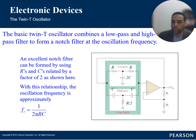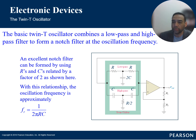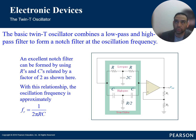The feedback network consists of two T-shaped filter networks. Each T network comprises two resistors and two capacitors arranged in a T configuration. The junction of the two resistors forms the output node, while the junction of the two capacitors connects to the input node. The values of the resistors and capacitors in the T network determine the oscillation frequency of the circuit.